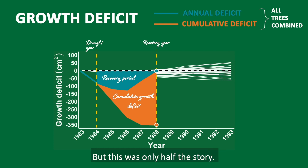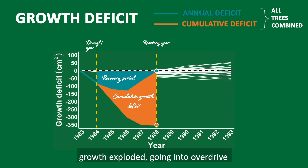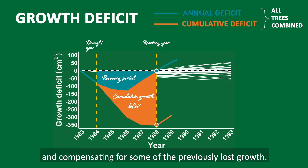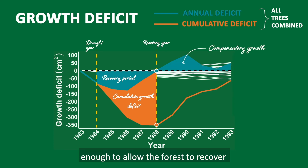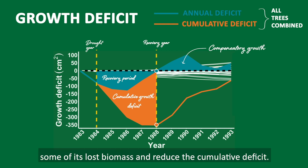But this was only half the story. After they had recovered, some trees' growth exploded, going into overdrive and compensating for some of the previously lost growth. The net effect of this compensatory growth was powerful enough to allow the forest to recover some of its lost biomass and reduce the cumulative deficit.